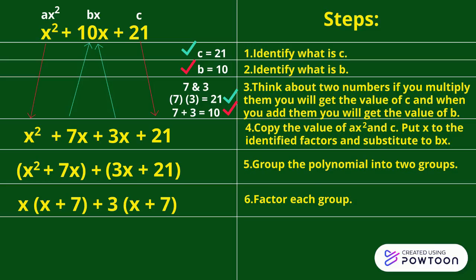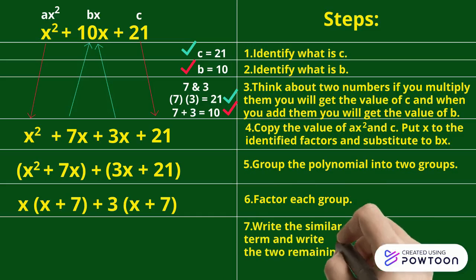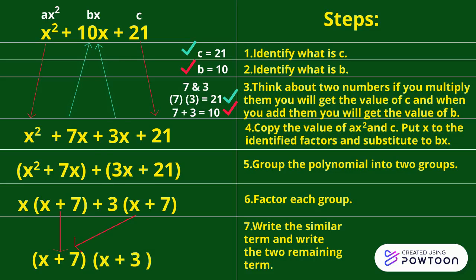Seventh step. Write the similar term and write the two remaining term. So the similar term is X plus 7 and the remaining term are X plus 3. So the final answer is the quantity of X plus 7 times the quantity of X plus 3.